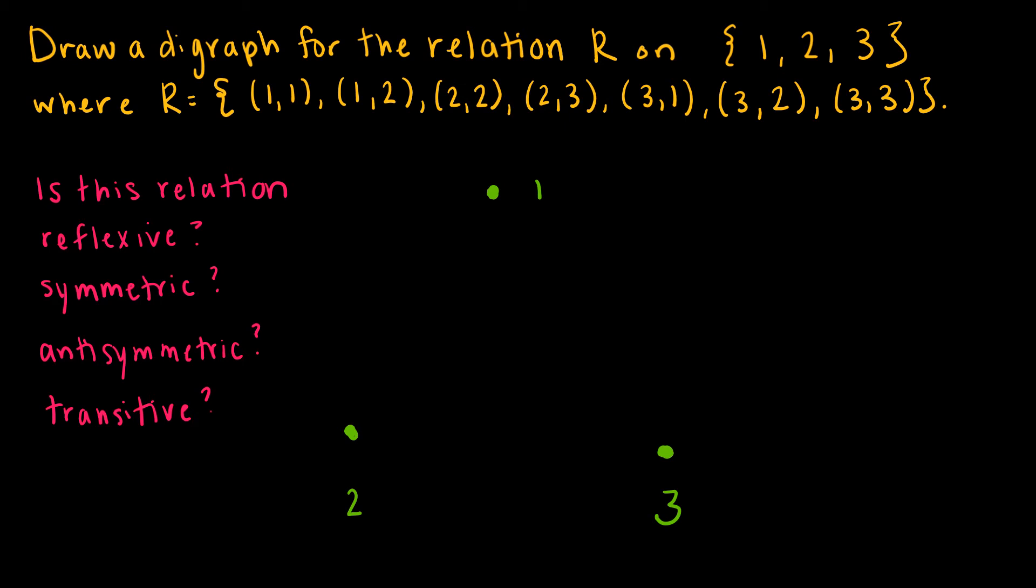We have 1, 1, which means 1 maps to itself. Then we have 1, 2, which means 1 goes to 2, and we should have an arrow that indicates that 1 is actually going to 2.